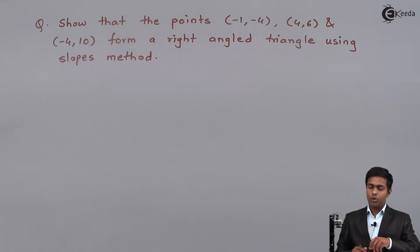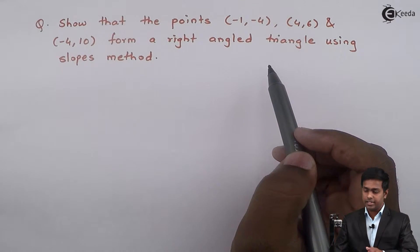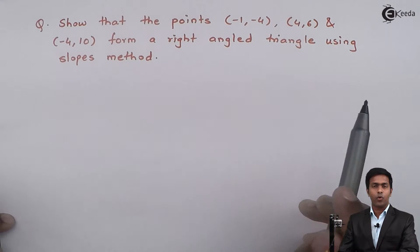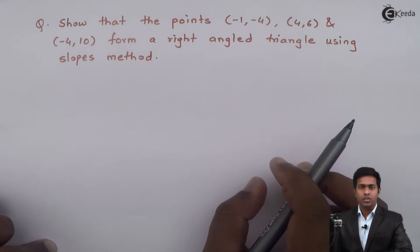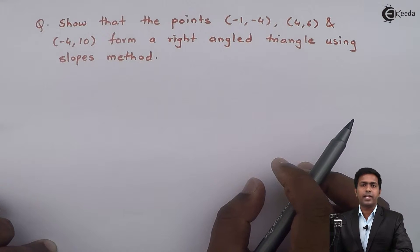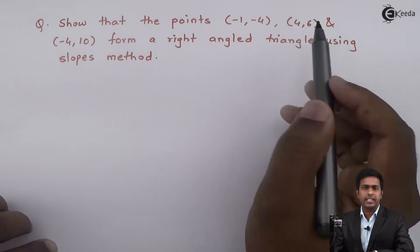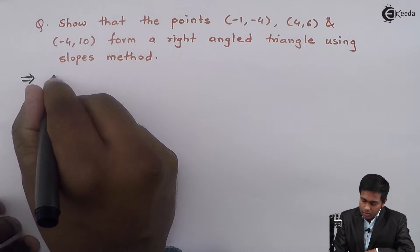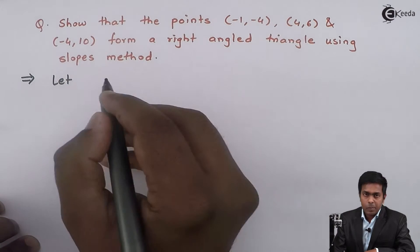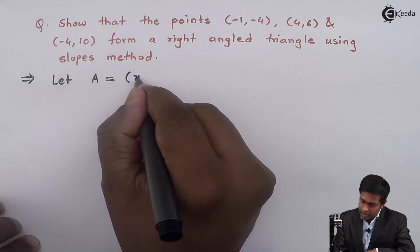To prove that these 3 points are the vertices of a right angled triangle, we have to use the property of perpendicular lines. First of all, I will assume the given points as A, B, C.